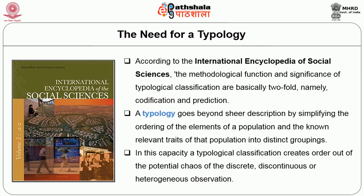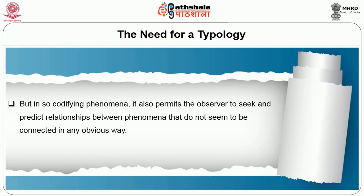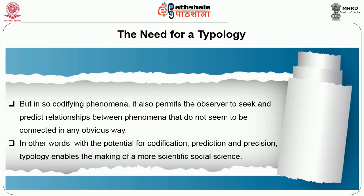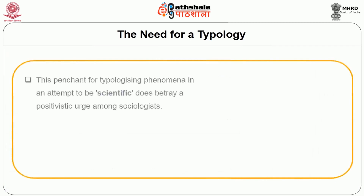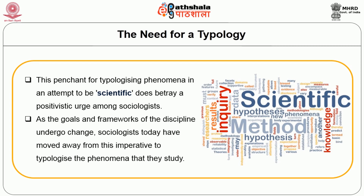In this capacity, a typological classification creates order out of the potential chaos of distinct, discontinuous, or heterogeneous observations. But in doing so — coding phenomena — it also permits the observer to seek and predict relationships between phenomena that do not seem to be connected in any obvious ways. With the potential for codification, prediction, and precision, typology enables the making of a more scientific social science. According to the International Encyclopedia of Social Sciences, the methodical function and significance of typological classification are basically twofold: codification and prediction. This penchant for typologizing phenomena as an attempt to be scientific betrays a positivistic urge among sociologists. As the goals and frameworks of the discipline undergo change, sociologists today have moved away from this imperative. Nevertheless, typologies of peasant movements have their uses and it is worthwhile to know about them.